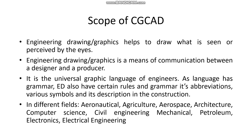It has a wide scope in other branches as well — aeronautics for designing various aeronautic products and aeroplanes; agriculture to design various agricultural instruments and equipment; aerospace; architecture for designing buildings; computer science for designing various robots; civil engineering for designing roads and bridges; mechanical engineering for machine drawing and technical drawing of any product; and petroleum, electronics, and electrical engineers also use it to draw various circuits.